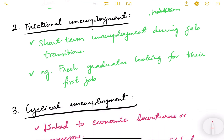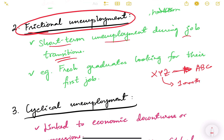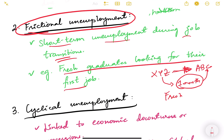Next is frictional unemployment — short-term unemployment during job transitions. For example, a person working at XYZ company who wants to switch to ABC company quits and spends one month searching and applying. During that period he is unemployed — this is frictional unemployment. Fresh graduates out of college who take three months, six months, or even a year to find their first job also fall under frictional unemployment.